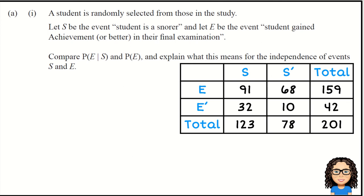Now I'm going to look at the table and the question. It says compare the probability of achievement or better given snoring, and compare that with the probability of achieving, and talk about what that means in terms of independence.